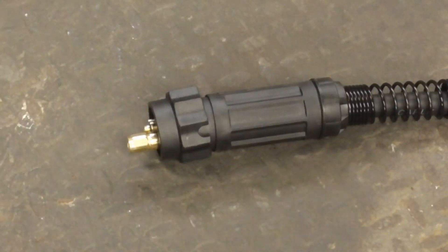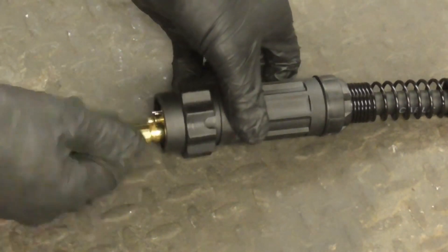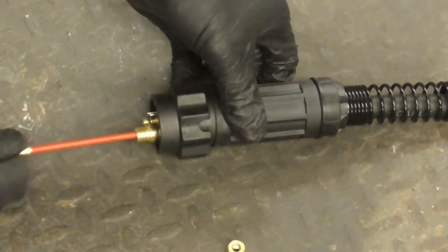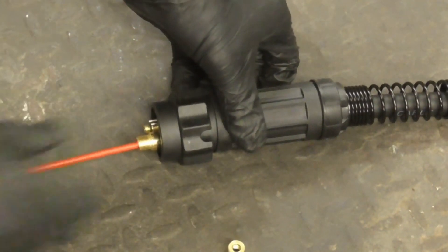On the end that connects to the welder, undo this little nut and pull out the standard liner.